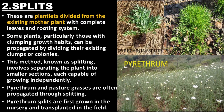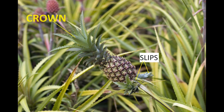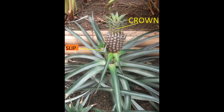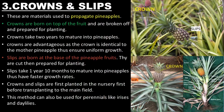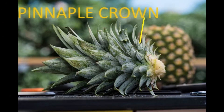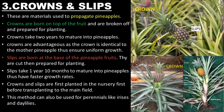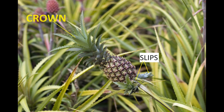Pyrethrum and pasture grasses are often propagated through splitting. Pyrethrum splits are first grown in the nursery and transplanted in the field. Crowns and slips are materials used to propagate pineapples. Crowns are born on top of the fruit and are broken off and prepared for planting. Crowns take two years to mature into pineapples and are identical to the mother pineapple, thus ensuring uniform growth.